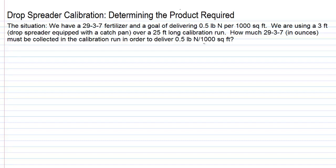We always work with the information that is provided, and one thing provided is a drop spreader width of 3 feet and a calibration length of 25 feet. So, 3 times 25 equals a calibration area of 75 square feet.